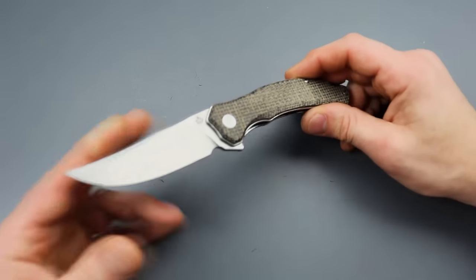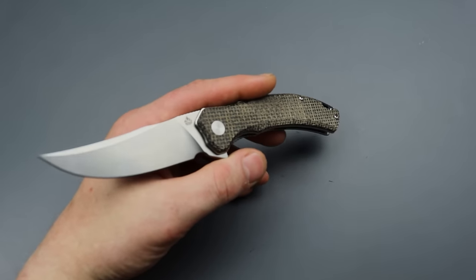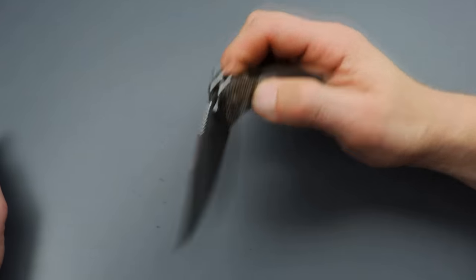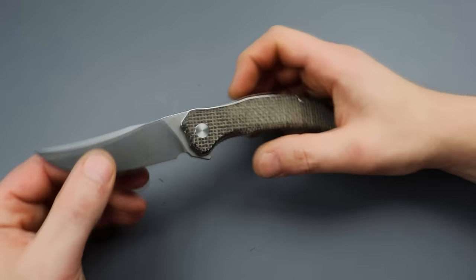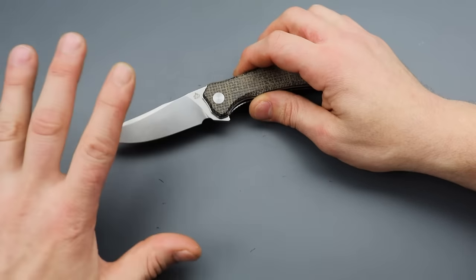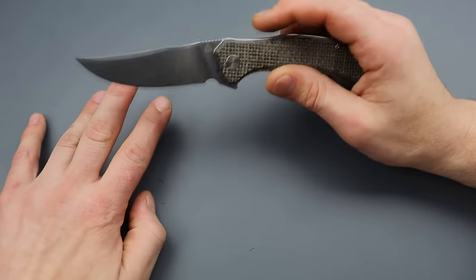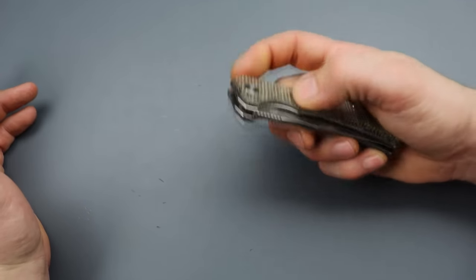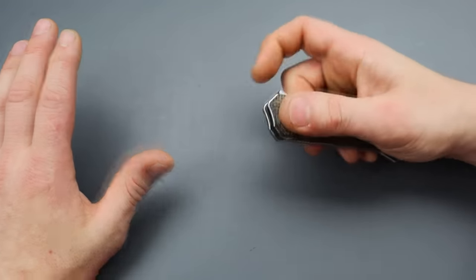Then we have this little guy from QSP. This is the QSP Walrus. The QSP Walrus is not on the list because in order to be on the list, you have to conquer a few things. One, fit, finish, tolerance, action, usefulness. And to me, and also usefulness for everyday carry.